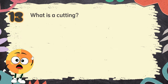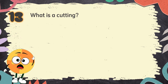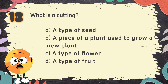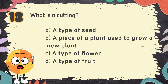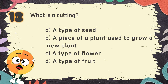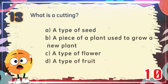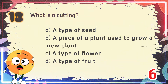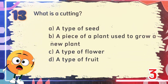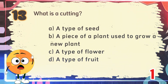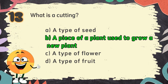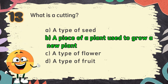Number 13: What is a cutting? The choices are: A. A type of seed, B. A piece of a plant used to grow a new plant, C. A type of flower, D. A type of fruit. The correct answer is B. A piece of a plant used to grow a new plant.